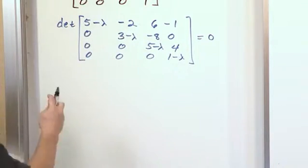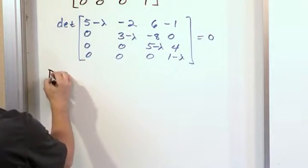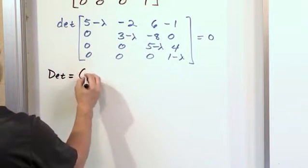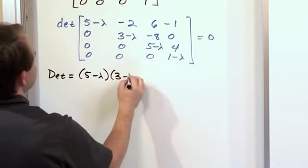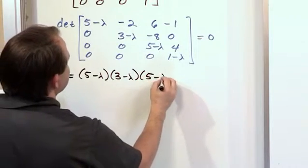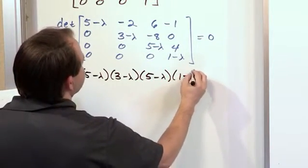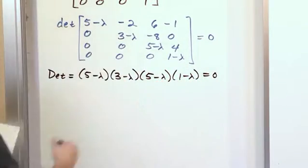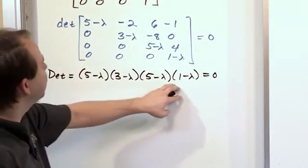So because this one's already triangular, you already know that the determinant is as follows: (5-λ)(3-λ)(5-λ)(1-λ). You know that that's the case. So in this case, it's already falling out because it's triangular.